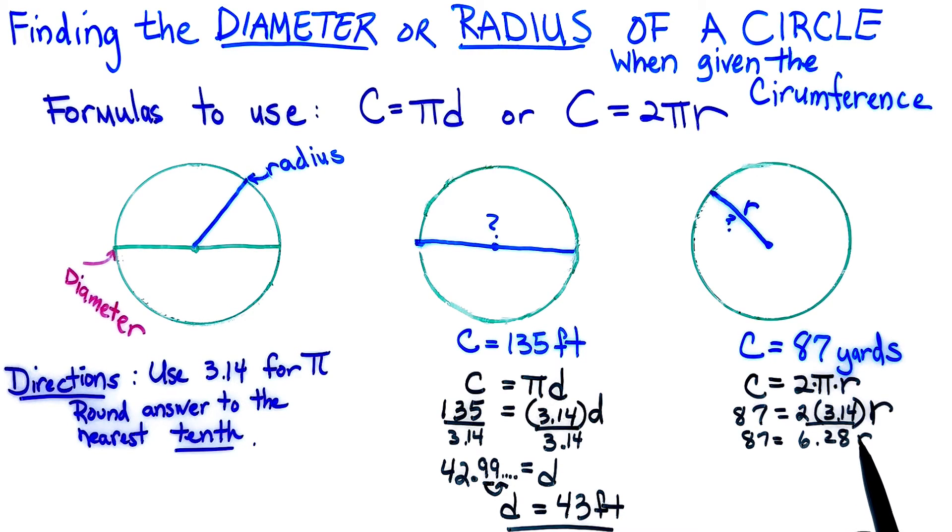I now am going to divide by the 6.28 on both sides of my equation, because whatever you do to one side of the equation, you have to do to the other. And when I do that, I end up getting a number that is going to go on to a lot of decimal places, so I will just write 13.85 and it's going on, equals my radius.